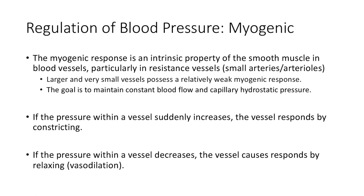The next reflex we'll talk about is the myogenic reflex. The myogenic reflex is an intrinsic property of the smooth muscle in blood vessels, particularly in the resistance vessels. It's not something we're going to see in the conduit vessels, like the femoral or the brachial, but we will see it in those smaller resistance vessels and arterioles. Basically, what these do is they help keep blood flow constant within those small vascular beds and in the capillaries, and also, probably more importantly, keep capillary hydrostatic pressure constant.